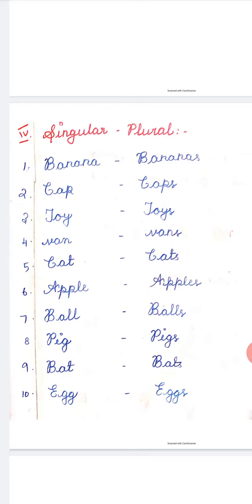For example, banana, bananas, cap, caps. Banana means one banana. Bananas means more than one banana.